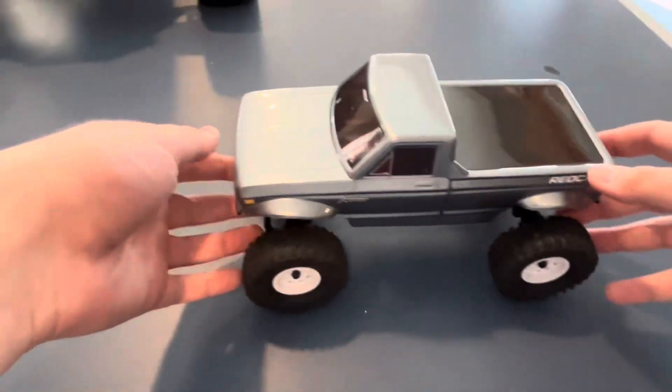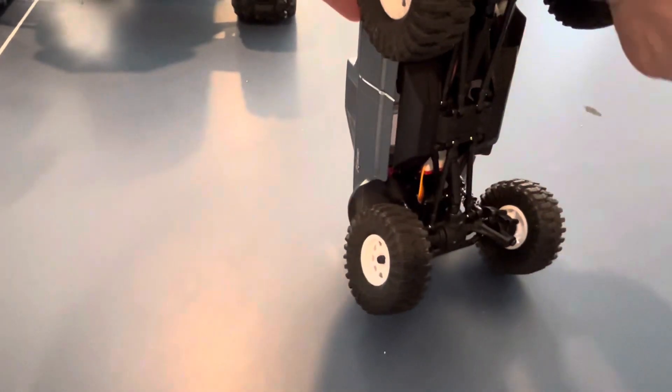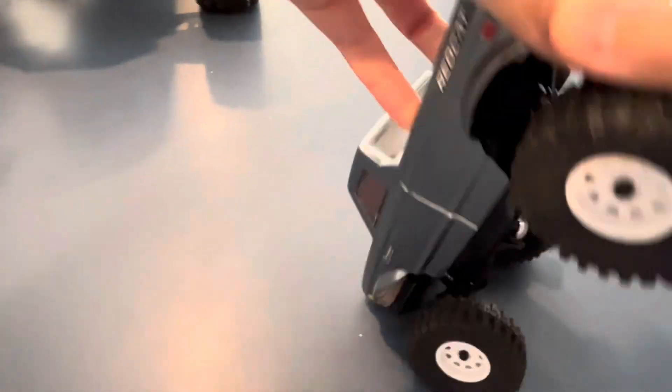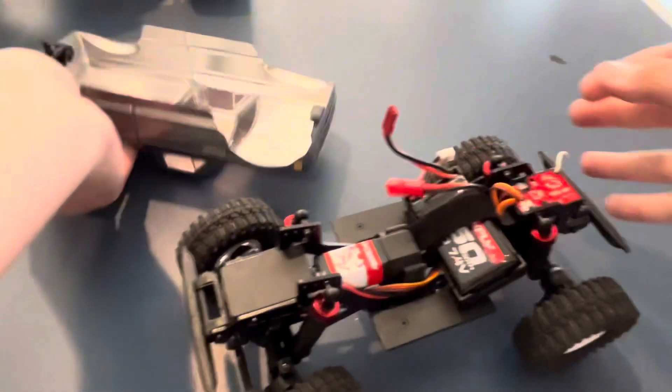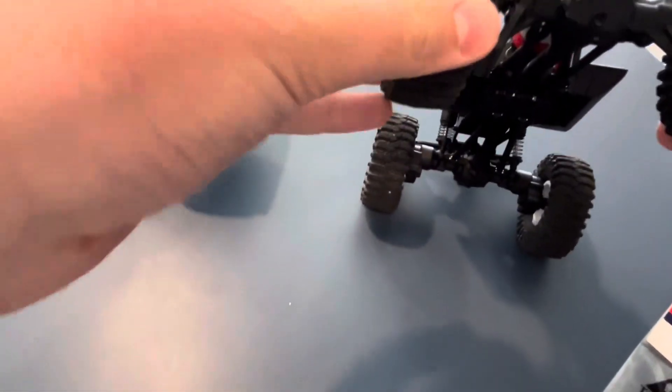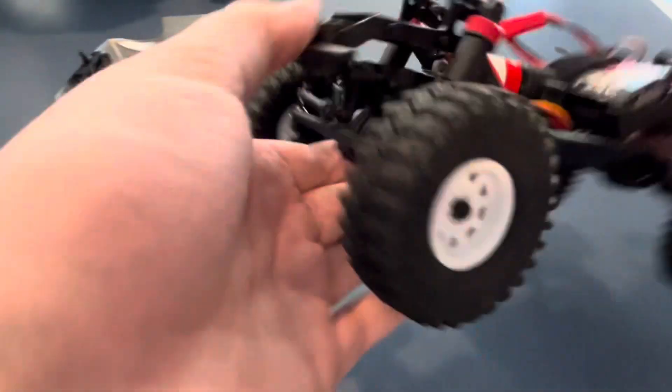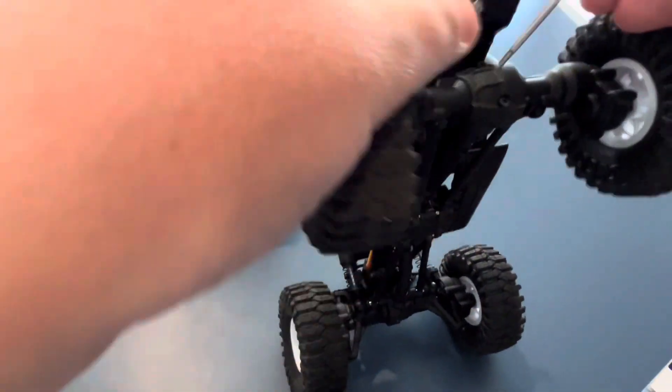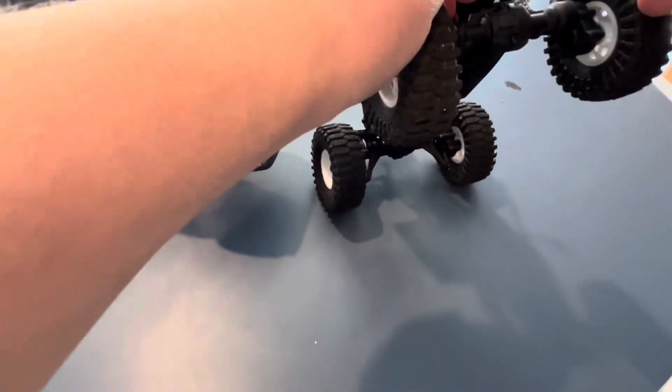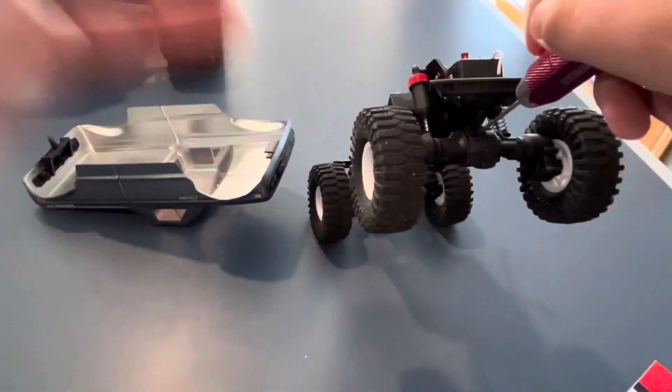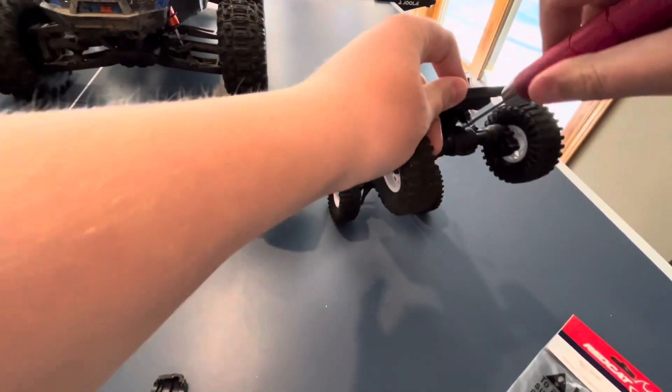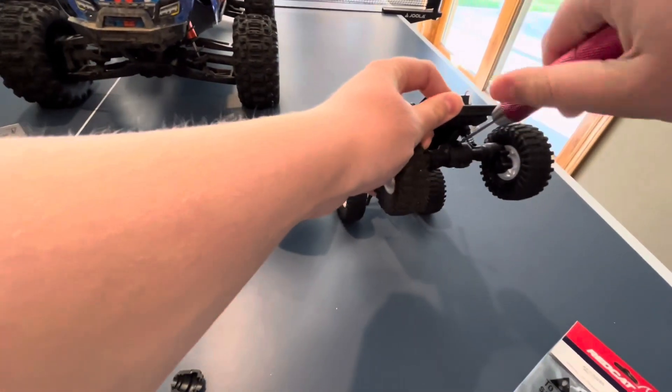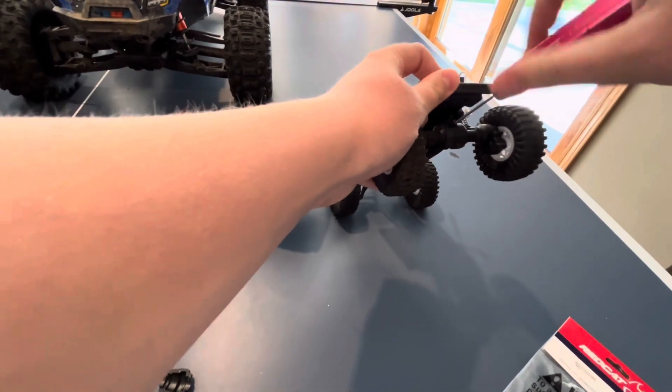Alright, so we gotta take the body off. Let's see here. Here we'll just start in the rear. I think it's a 1.5 if I'm not mistaken. Let's see. Yep, it is a 1.5, so you need a 1.5 millimeter Allen wrench for this.